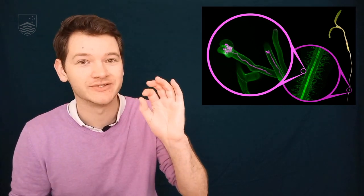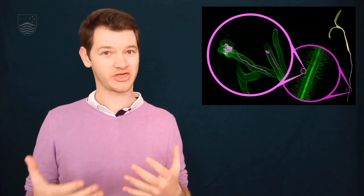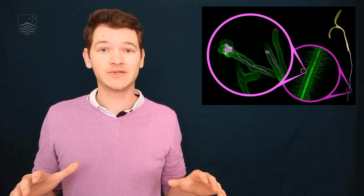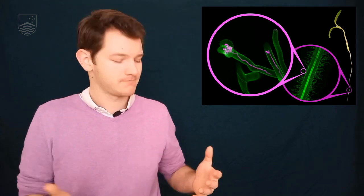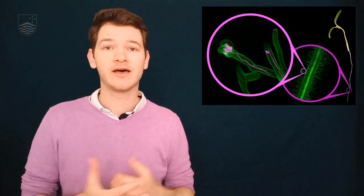These microscopic tubes are called infection threads, and they're fundamental to this symbiosis, but we don't understand how they evolved or how they grow.